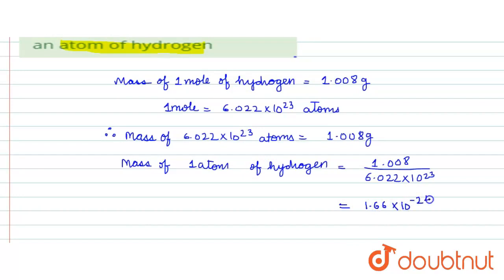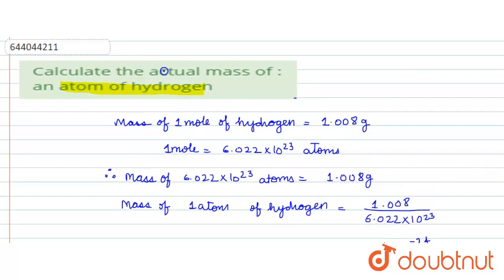Thus in the question it was asked the actual mass of an atom of hydrogen, and the answer to this question is 1.66 into 10 to the power minus 24 grams.